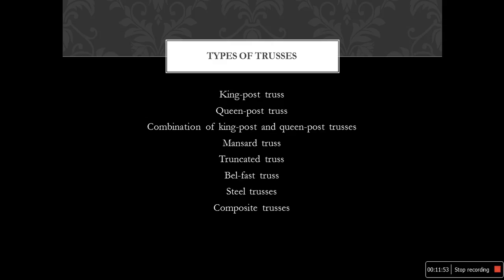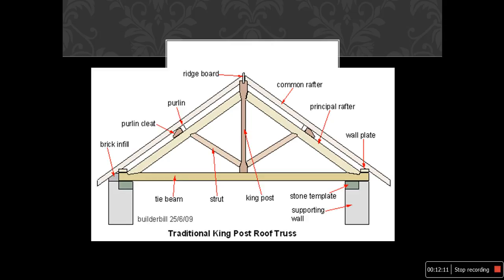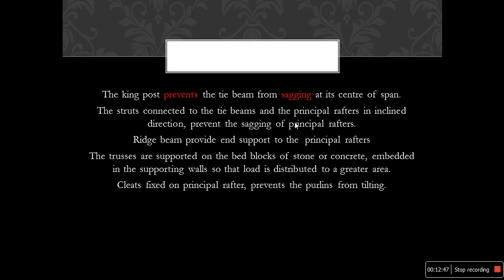The important elements in the king post truss are: lower tie beam, two inclined principal rafters, two struts, and the king post. The vertical member is the king post, and the members connecting the king post and the rafters are called struts. The common rafter is connected by means of purlin and purlin cleat. The king post prevents the tie beam from sagging. The struts connect the tie beam and the principal rafters, which are inclined in two directions.